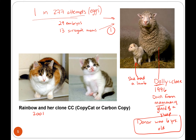In 2001, there was this cat Rainbow, and she was cloned. This is her genetic clone — Copycat, or Carbon Copy. What I want you to notice is they don't look identical. If you've taken genetics, you've hopefully learned about X-inactivation and calico cats, and know that their fur is determined by random X-inactivation of their fur pattern.